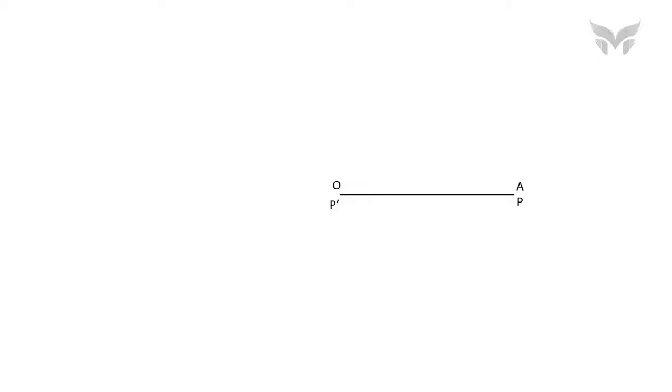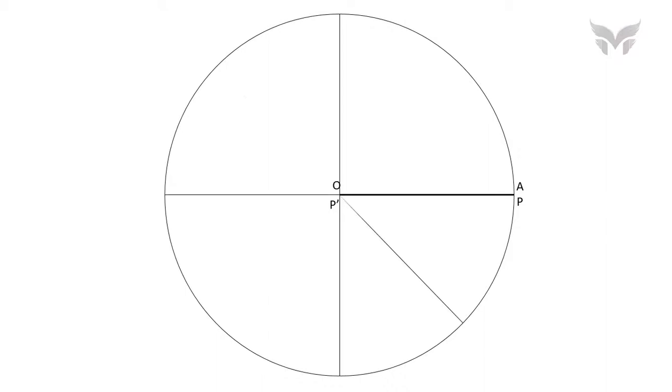Now, take a compass and take the distance equal to OA which is 80 mm and with center O, draw a circle. Next step is to divide the circle into 8 equal parts. You may divide it into 12 equal parts. As we have divided our circle into 8 equal parts, now let's divide the distance traveled by the point which is OA here also into 8 equal parts.